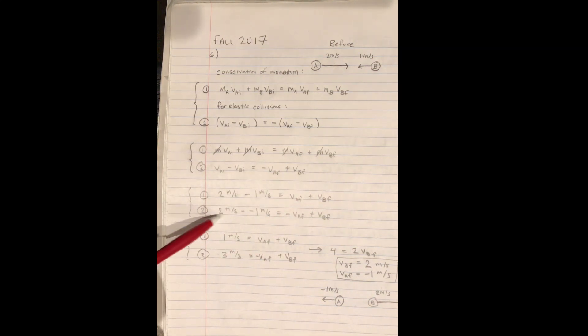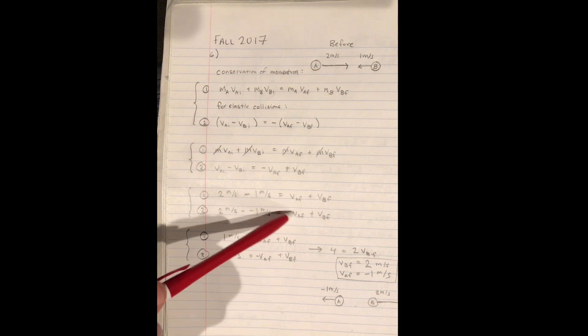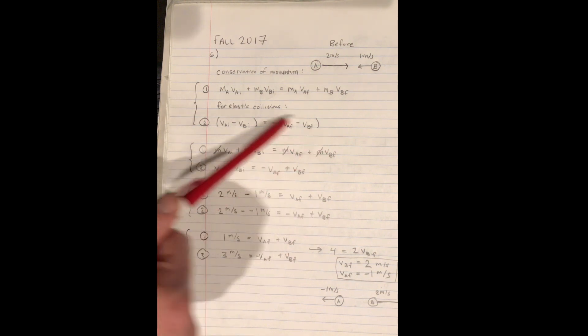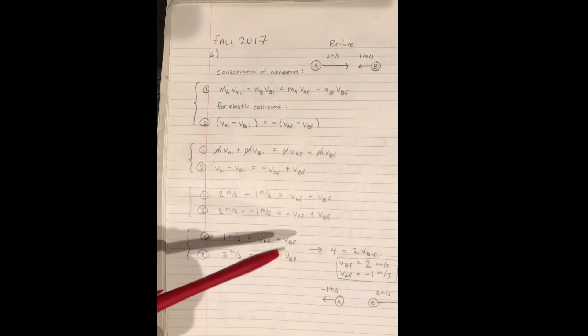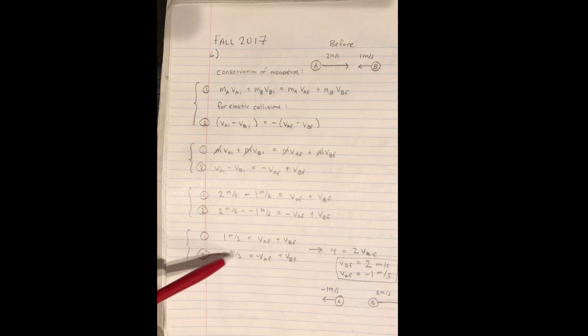And then we have two minus negative one equals negative VAF plus VBF, and that came from this special elastic condition. And then that reduces to one meter per second equals VAF plus VBF and three meters per second equals negative VAF plus VBF.